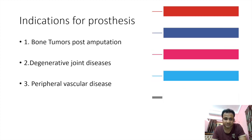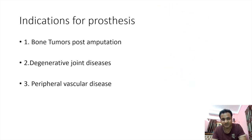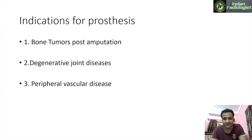What are the indications for a prosthesis? A prosthesis can be used for three major indications: bone tumors, which can result in amputation causing loss of normal limb function; degenerative joint diseases which need replacement by a prosthesis; and peripheral vascular diseases which again result in loss of limb function, necessitating the use of a prosthesis.